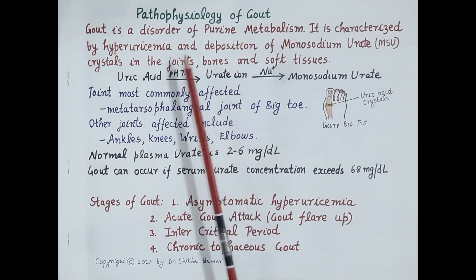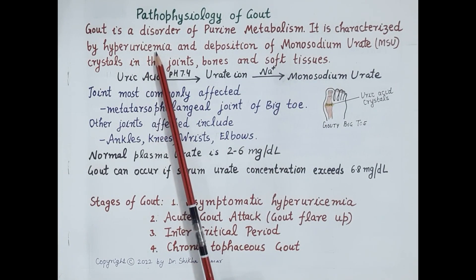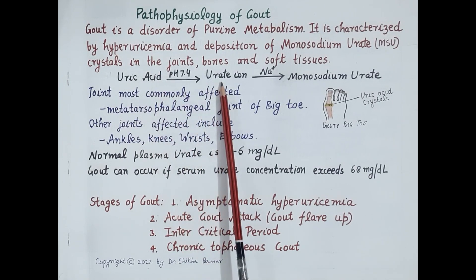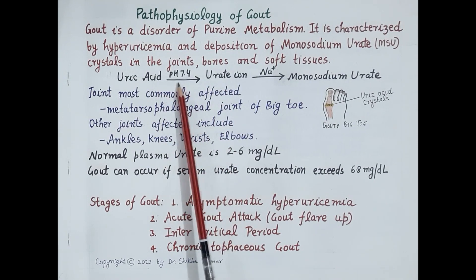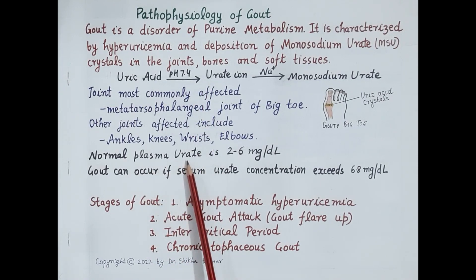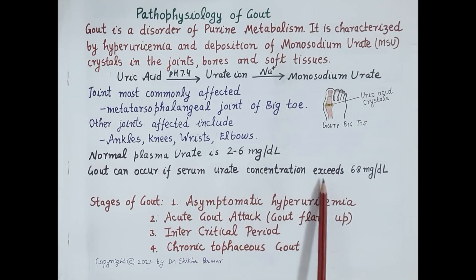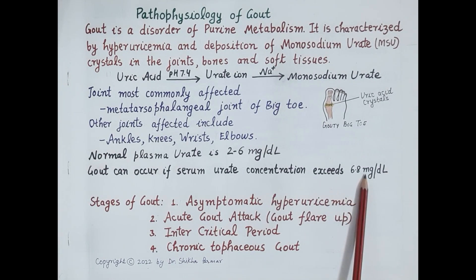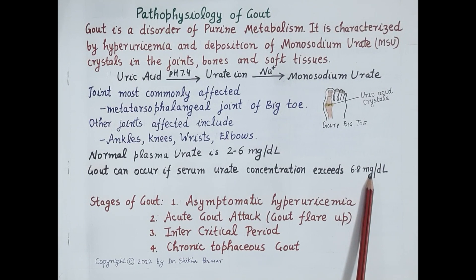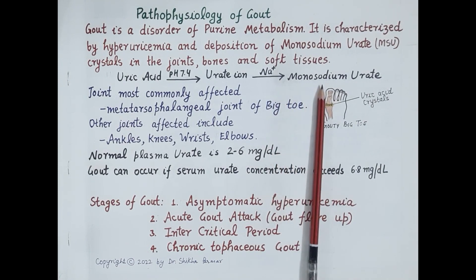Uric acid is the breakdown product of purine metabolism. So gout is characterized by hyperuricemia, that is increased uric acid in the blood. Uric acid exists as urate ion in the plasma at a physiological pH of 7.4. The normal plasma urate concentration is 2 to 6 mg per deciliter. But if the serum urate concentration exceeds 6.8 mg per deciliter, then these urate ions become insoluble in the plasma, and they bind to sodium ions to form monosodium urate crystals.